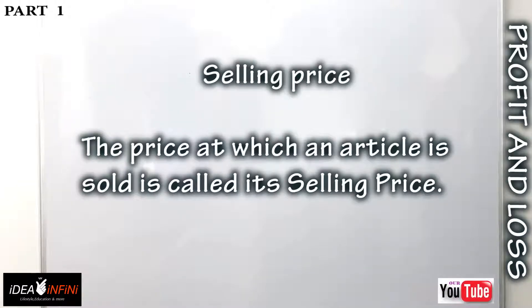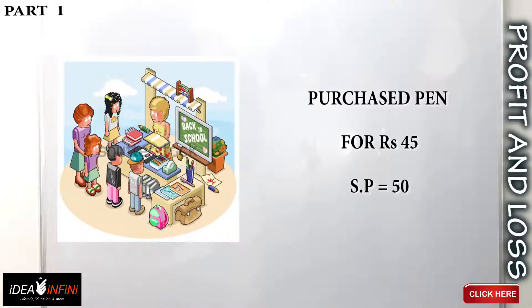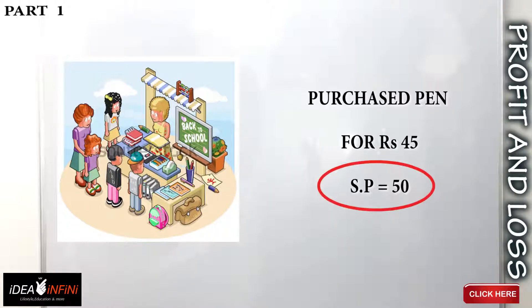The next term is selling price. The price at which an article is sold is called its selling price. In this example, the pen was purchased for rupees 45 and the shopkeeper is selling it to me for rupees 50. So the selling price (SP) is rupees 50.